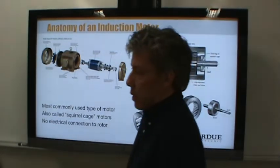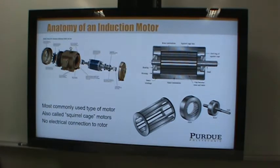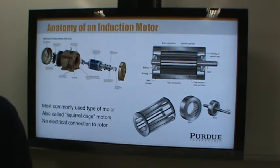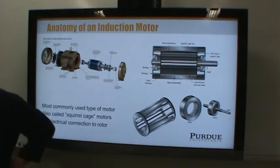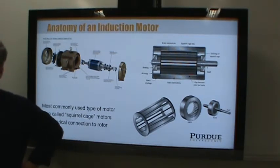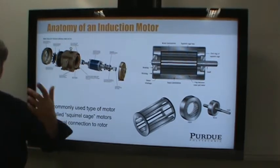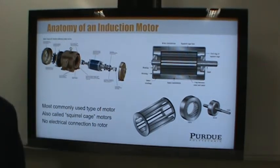In power tools, it used to be more common to use universal motors, which run off AC or DC. Nowadays most power tool motors are DC because they use battery packs. But in industry, for real larger-scale things, we typically use AC motors.